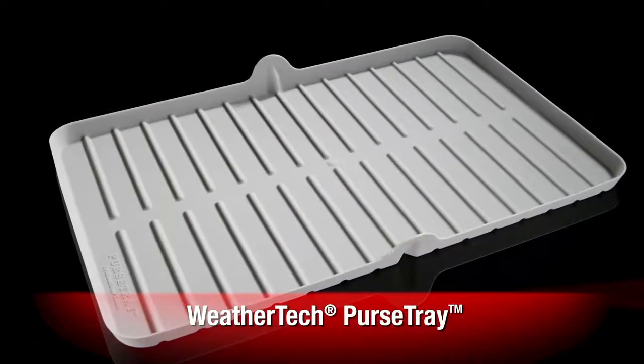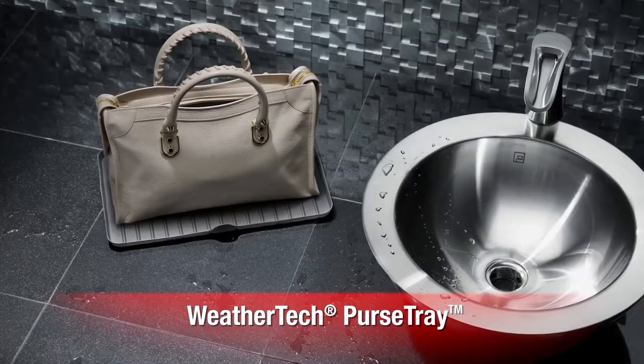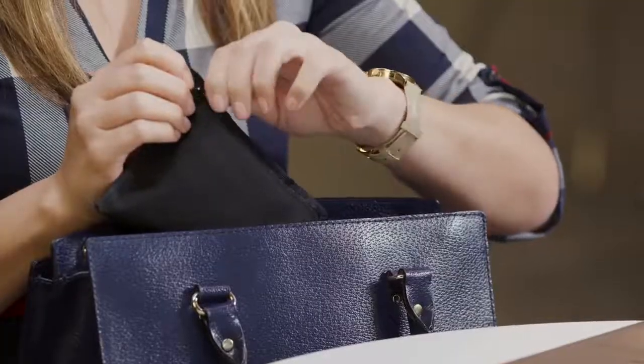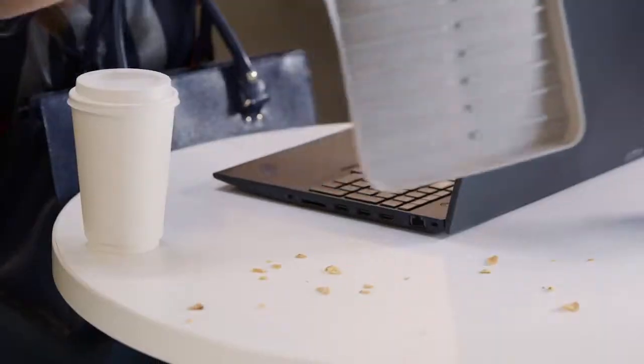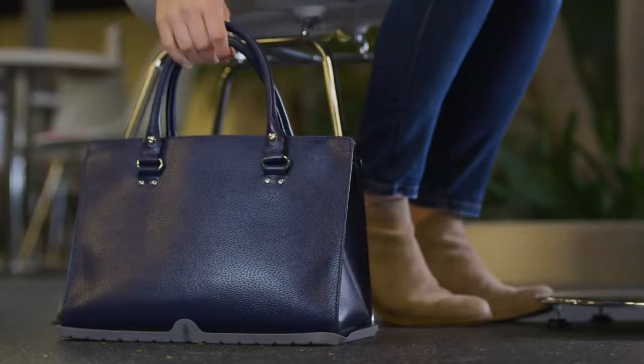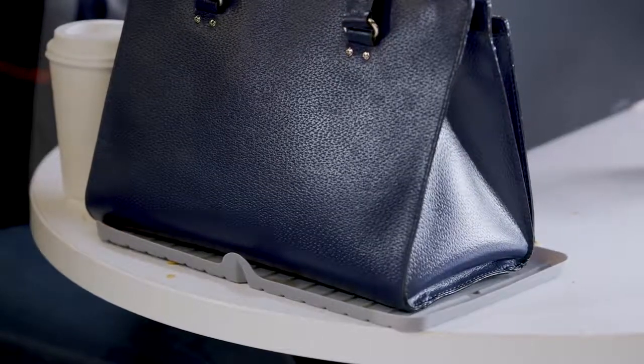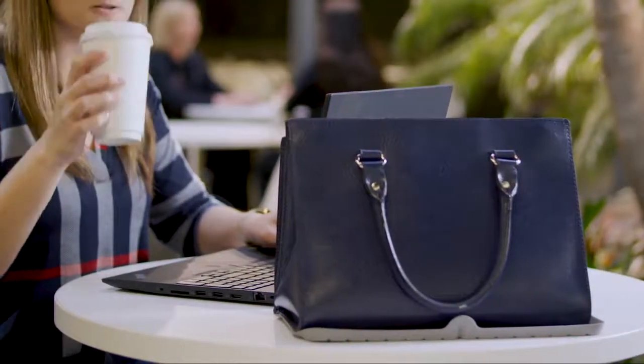The WeatherTech Purse Tray is there to protect your belongings from wet and unclean surfaces. In just seconds, the 8 by 13 inch mat folds open and allows personal items to rest on top, shielding the bottom from unwanted germs and messes.